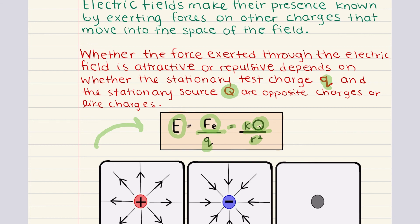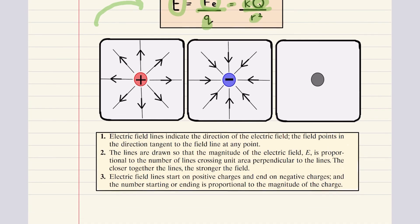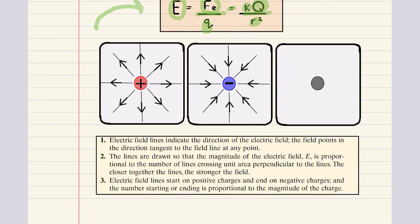Now to help visualize electric fields, we often use electric field lines. These lines represent the direction and strength of the electric field. And there are a few important points to remember about electric field lines. First, the lines point in the direction of the electric field at any point. For positive charges, field lines radiate outward, while for negative charges, they point inward.